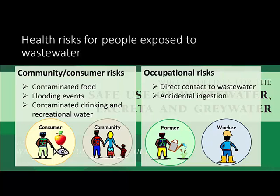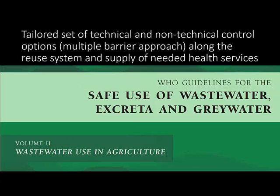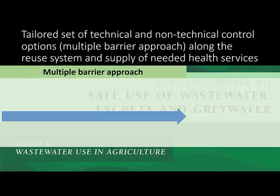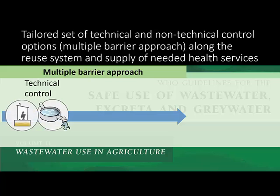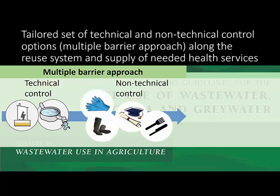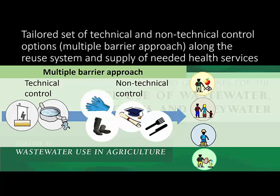Second, workers and farmers experience occupational health risks due to their frequent contact with raw or only partially treated wastewater and accidental ingestion of this water during working procedures. An important feature of the guidelines is that it sets out health-based targets based on a multiple barrier approach, which can consist of technical control options, such as safe toilet facilities and treatment plants, and non-technical control options, such as personal protective equipment, education, and risk awareness programs on food processing.